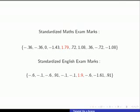A z-score of 1.79 shows the highest maths mark was 1.79 standard deviations above the mean. The highest English z-score of 1.9 shows that mark was 1.9 standard deviations above the mean. With the higher of the two being 1.9, the English mark is more remarkable.